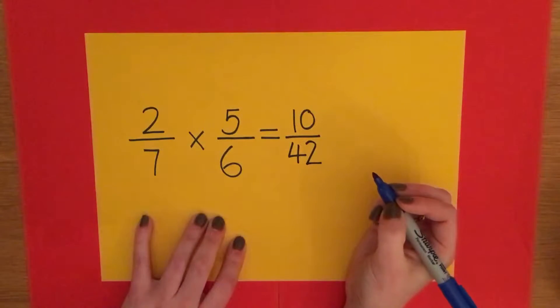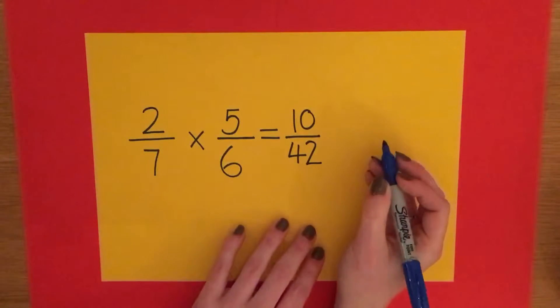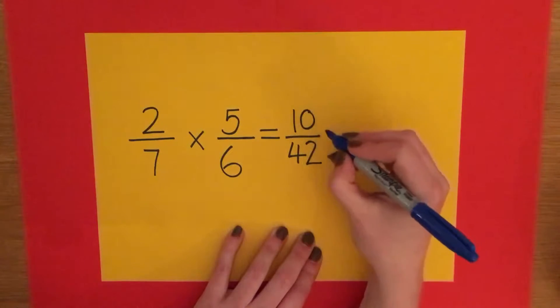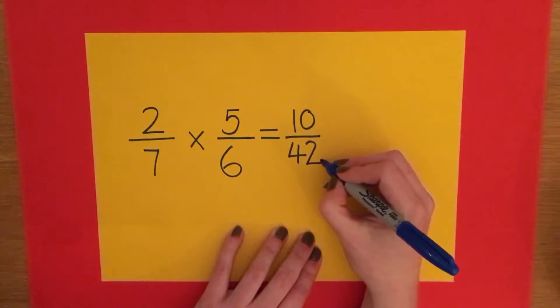But we can't stop there. We need to simplify before it's time to say goodbye. Both my numerator and my denominator are even numbers, so they must be divisible by 2.